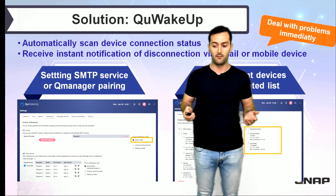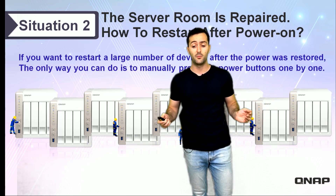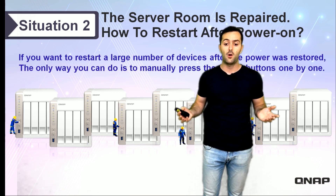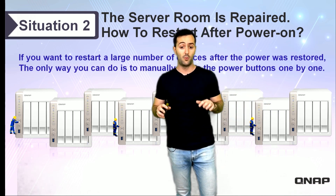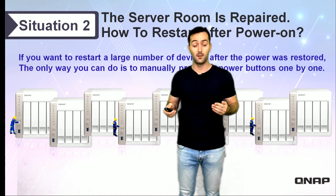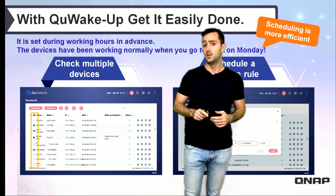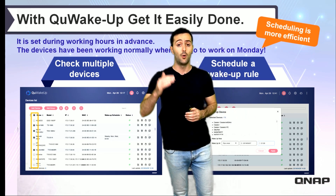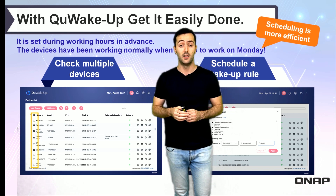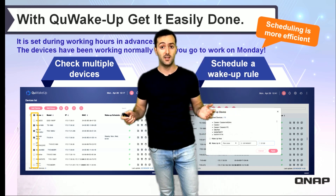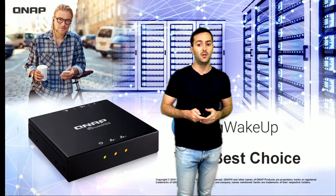Another situation would be server rooms, where you have to restart devices after powering them on. If you want to restart a large number of NAS devices after power is restored, normally the only way is to manually press the power buttons one by one. But with Qwakeup, you can group them — for example, put all NAS devices and servers in a server room group — and wake up every device in that group simultaneously. You can also set a scheduled wake-up for this situation.